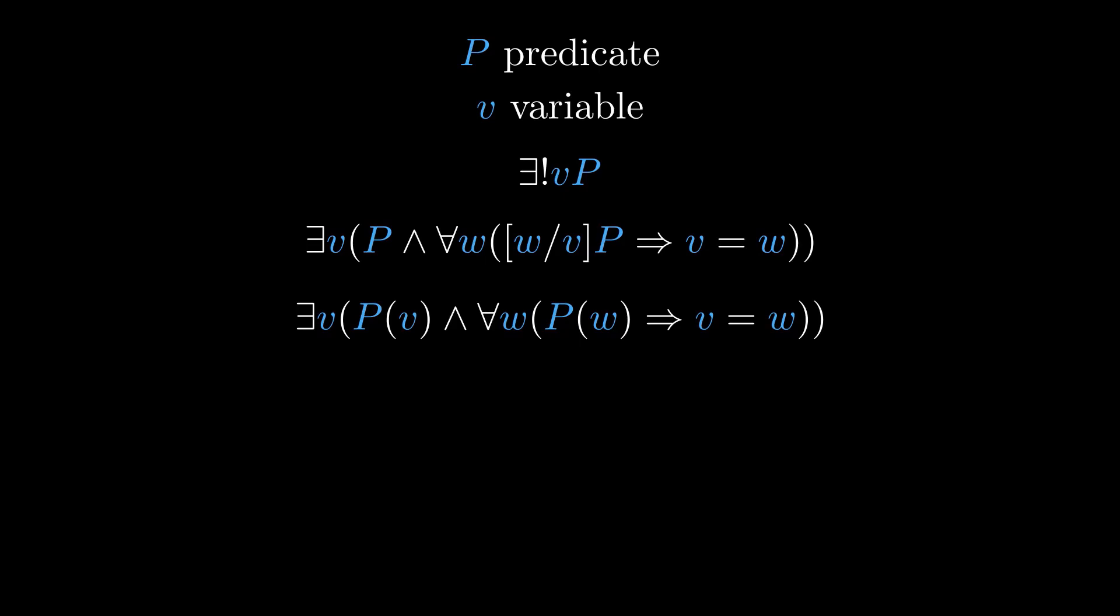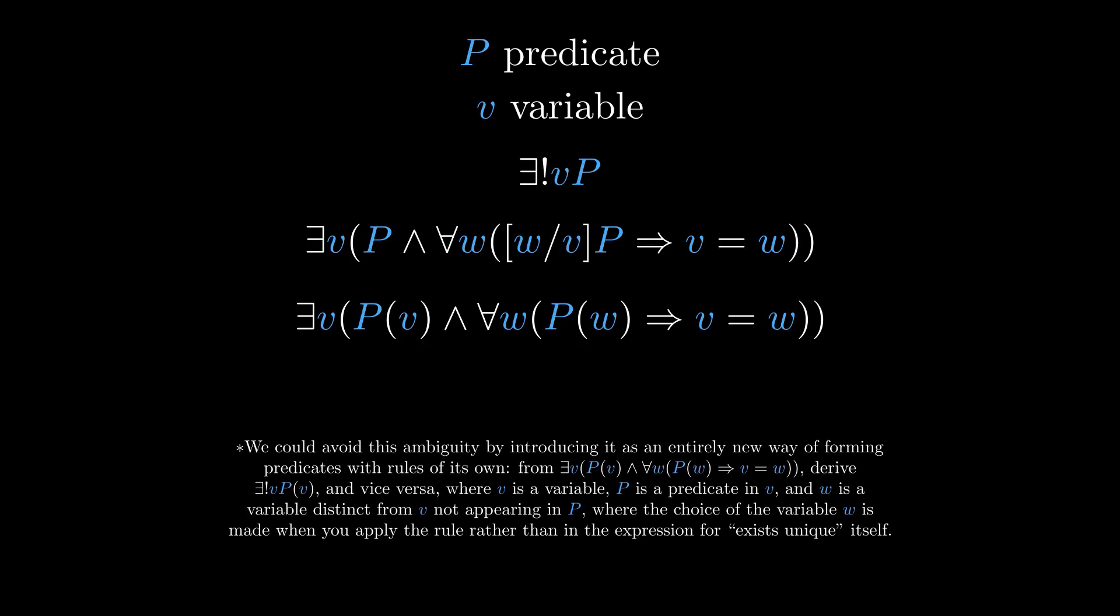There exists v such that v has the property P, and for all w, if w has the property P, then v equals w. Because we have almost free reign in choosing the variable w, there exists a unique v such that P doesn't correspond to one single expression in terms of the logic symbols from before, but multiple equivalent statements.